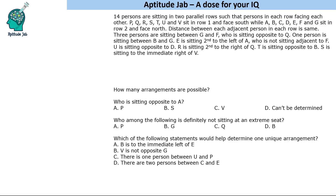Welcome to Aptitude Lab. This is a seating arrangement problem. There are 14 persons sitting in two parallel rows facing each other. PQRSTUV sit in row one and face south, and ABCDEFG sit in the second row facing north. So seven people face south and seven face north. One of the questions asks how many arrangements are possible and which statement would determine one unique arrangement, meaning there are multiple possibilities.